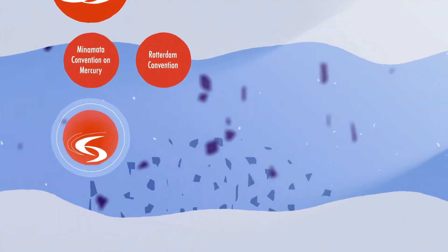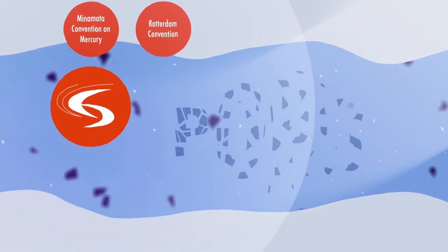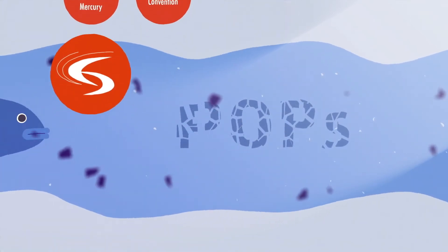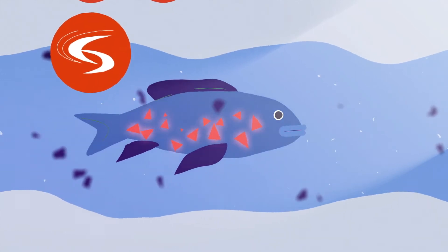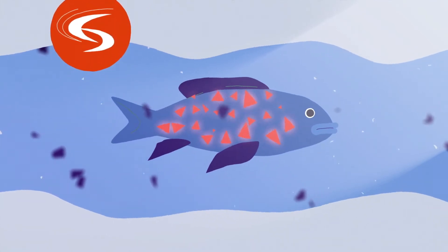Meanwhile, the Stockholm Convention works to regulate persistent organic pollutants, or POPs, which can leak from plastics left in water, accumulating in the tissues of marine species.